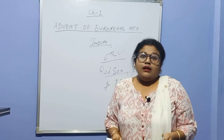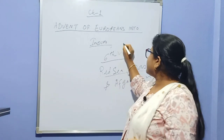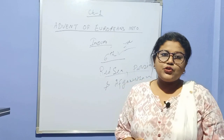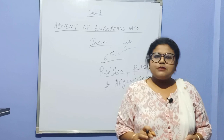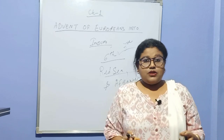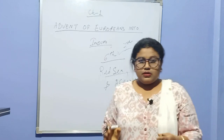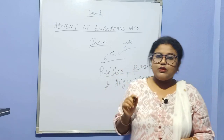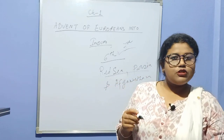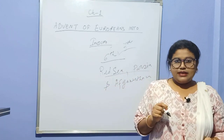But when the Arab nations captured many countries, the bulk of the Indian trade was monopolized by the Arabs. So in the 7th century, the Arab nations captured many countries. And then there was the capture of Constantinople by the Turks.